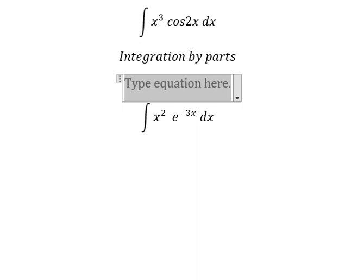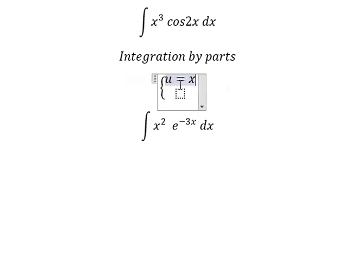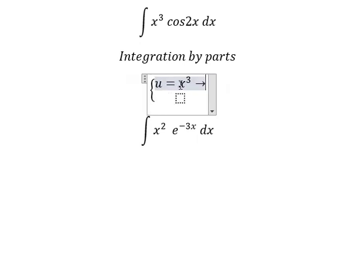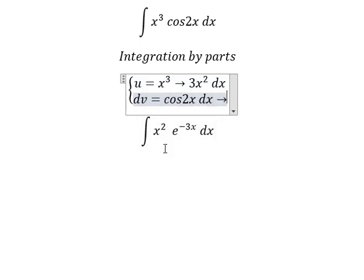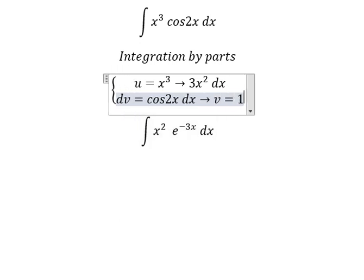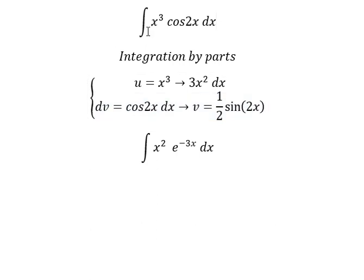We put u equals x to the power of 3. We need to find the derivative for both sides. We have dv equals cosine 2x dx.